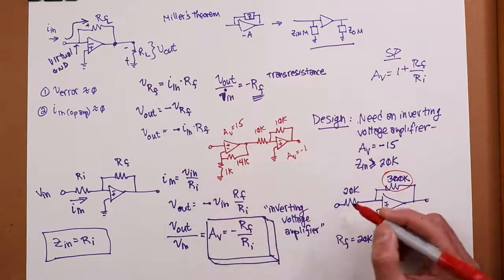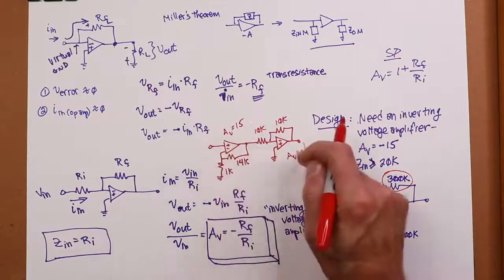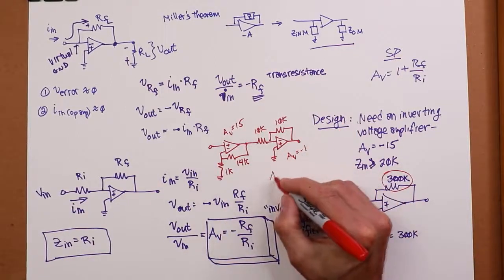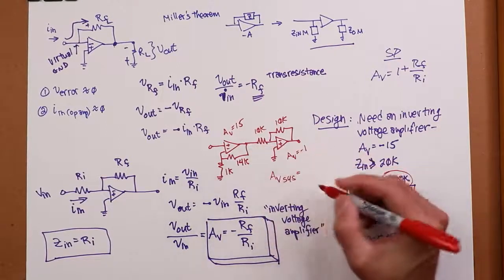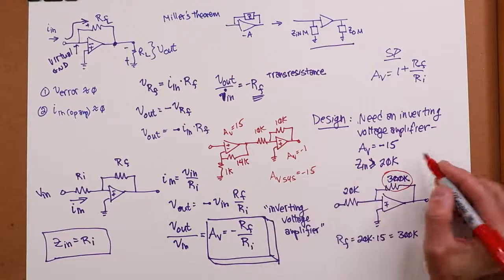This gives us the gain of 15. So, just like any multi-stage amplifier, you just multiply this one by this one. So, the gain of the system is negative 1 times 15 or negative 15. And I have that part of the spec.